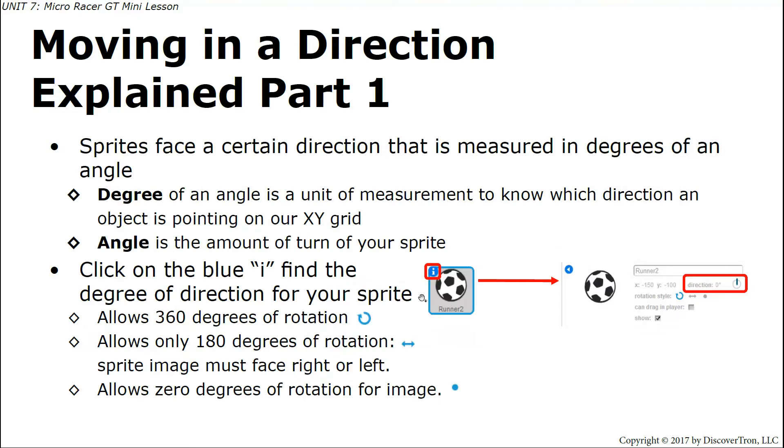If you click on the letter I for this soccer ball and come over here, you'll notice that direction is facing up by the blue line facing up and it's at zero degrees. So technically this sprite is facing upward because the information we got from the sprite by clicking on this letter I tells that it's facing up. Also note that its rotation style is 360 degrees. That means this ball can turn with its image 360 degrees.